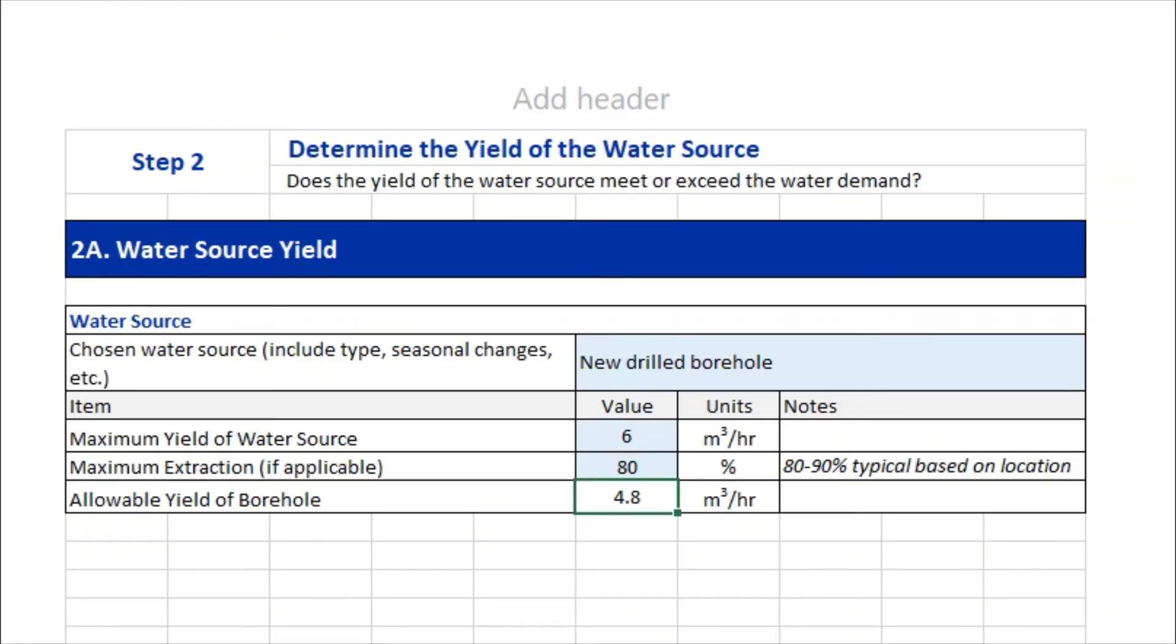Jumping back into our spreadsheet now, we're on step two, which is to determine the yield of the water source. First step is to identify the water source, which in this case is a new drilled borehole, and then to enter the maximum yield of the water source, which was six cubic meters per hour, and then the maximum extraction percentage, if it's applicable in the region.